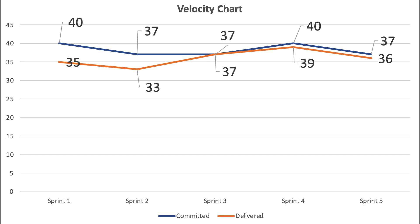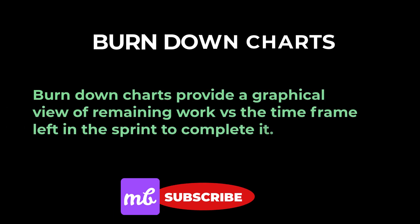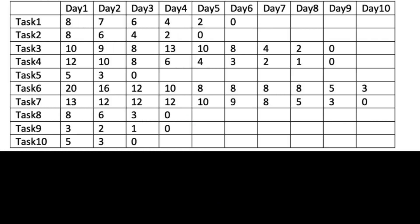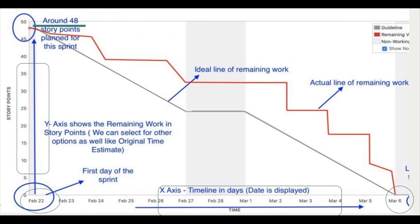But let's say we want to track what's happening in between the sprint so that correct measures can be taken at the right time. In that case, we use burndown and burn up charts. We will discuss burndown charts first. Burndown charts provide a graphical view of remaining work versus the time frame left in the sprint to complete it. The same information could be shown in a tabular format, but with charts it's easier to view how much total work is remaining with respect to the number of days left.